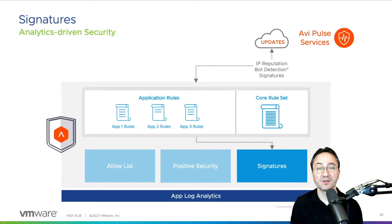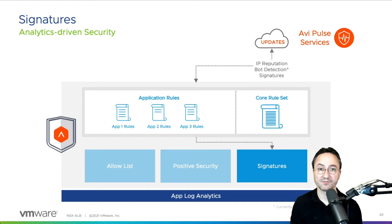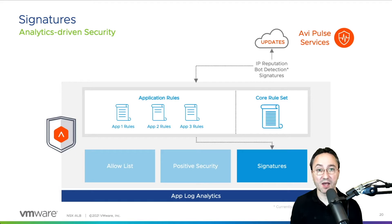The main topic of this video are the signatures. We have two types of signatures in the application firewall: the application rules and the core rule set. Together they provide our comprehensive signature protection. Both these signature types are continuously updated through our AVPulse service, which any controller can be registered with, and then it will fetch these updates to the signatures automatically.